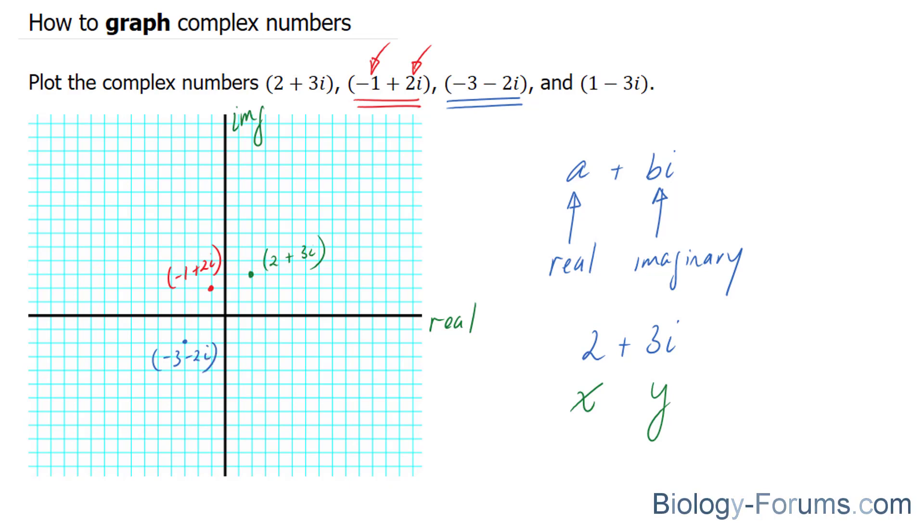And finally, using the color black, 1 represents your real, and negative 3 represents your imaginary. One to the right, 3 below.